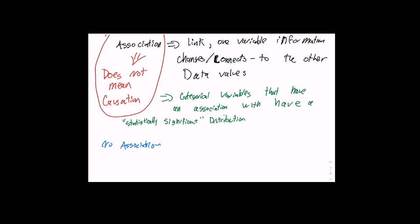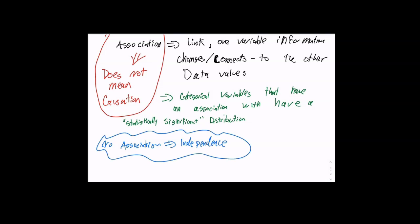If you keep following the correct decision-making processes over and over, good things happen. No association is the same thing as independence. When I say independent or independence, it's the same thing as saying no association. Sometimes in your homework the question will ask: is there an association? Other times it'll ask: are they independent? Is there evidence of them being independent?